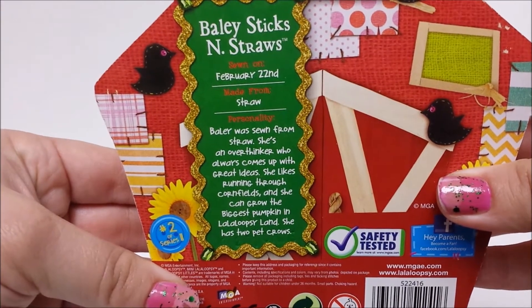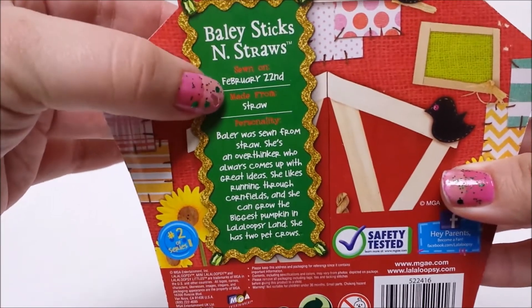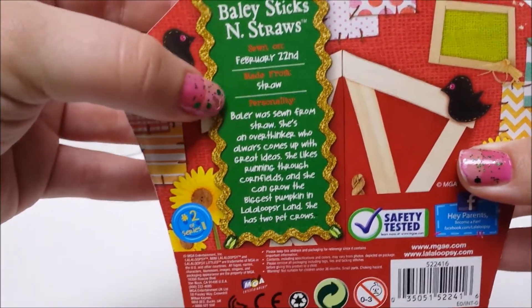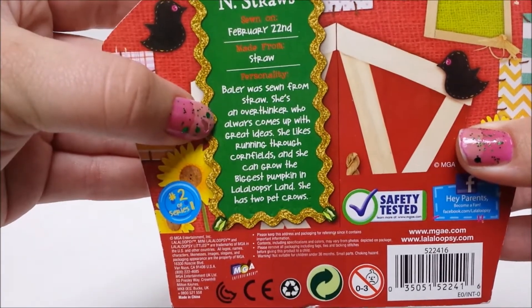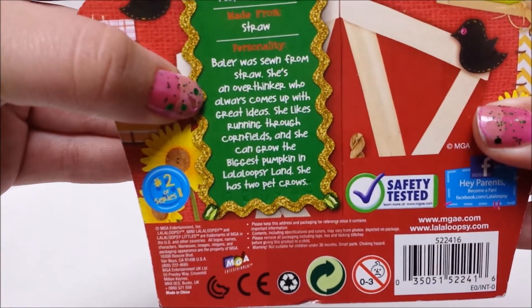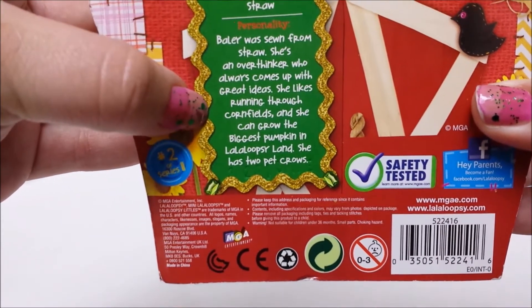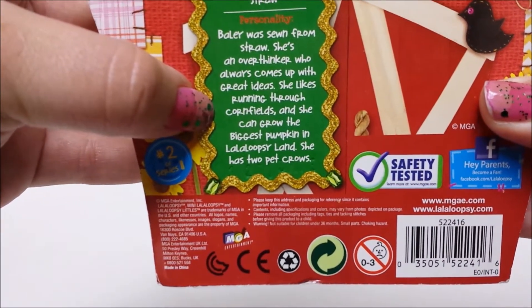Just a few things about her. February 22nd was when she was sewn, and what she was sewn from, straw. And just a few little facts about her and what she likes to do in her character.